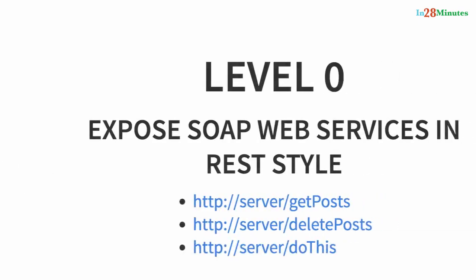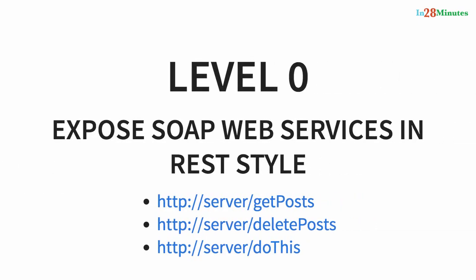Richardson Maturity Model defines four levels. Level zero is basically exposing your SOAP web services in REST style. If you look at the URIs, they are just like SOAP web services: get post, delete post, get course details, delete course details, and things like that. These are basically SOAP web services which support both JSON and XML, exposed over HTTP. You can talk to these services over the web, but they are not really using things like resources or actions.